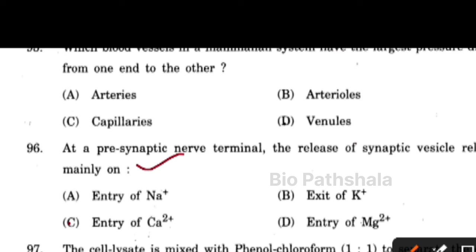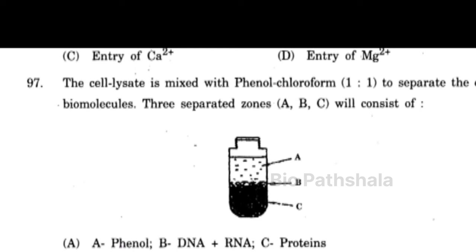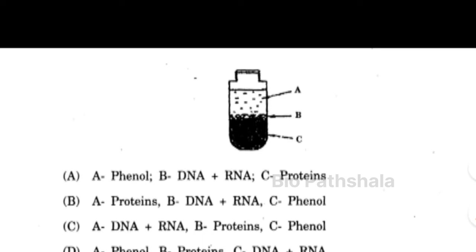Next question: cell lysate is mixed with phenol-chloroform in a 1:1 ratio to separate cell biomolecules into three separate zones A, B, and C. The correct answer is option number C — zone A contains DNA and RNA, zone B contains proteins, and zone C contains phenols.